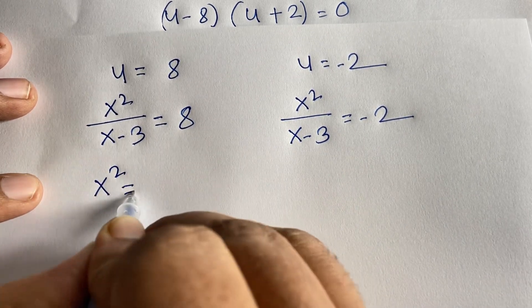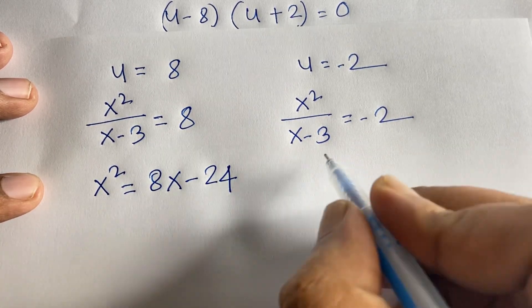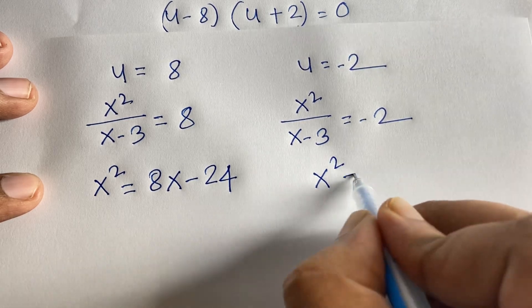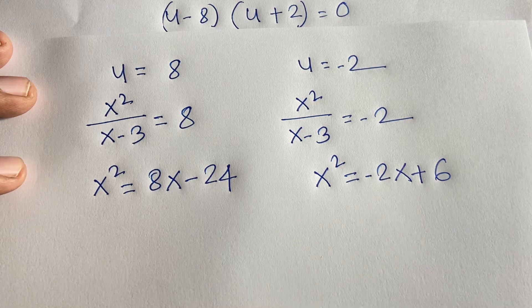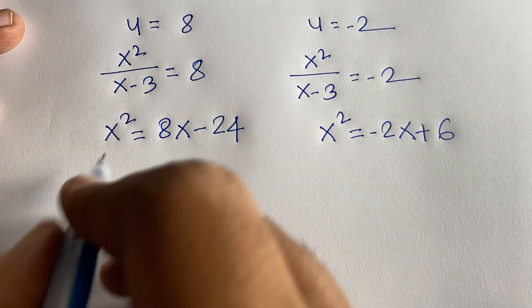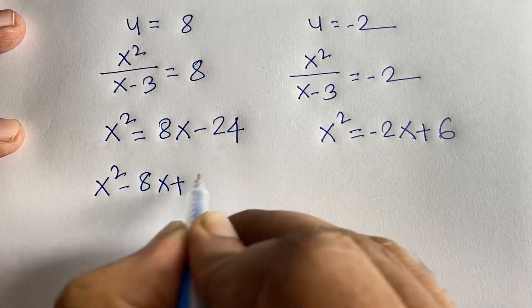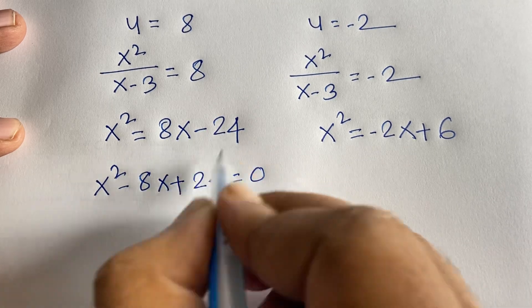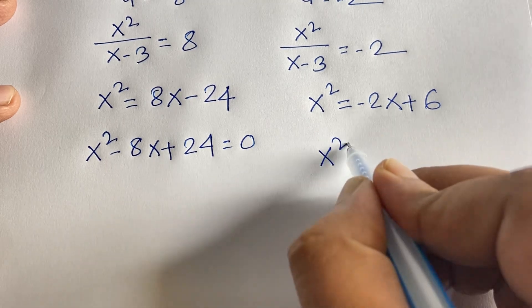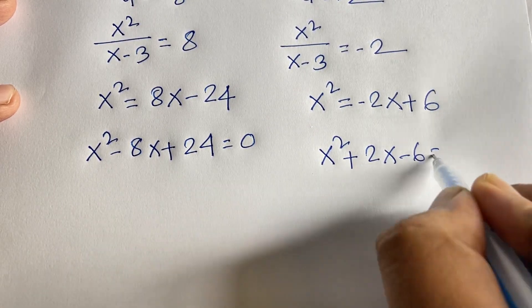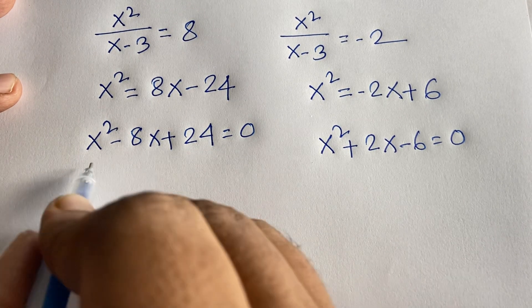For Case 1: x² = 8(x-3) = 8x - 24, giving x² - 8x + 24 = 0. For Case 2: x² = -2(x-3) = -2x + 6, giving x² + 2x - 6 = 0.